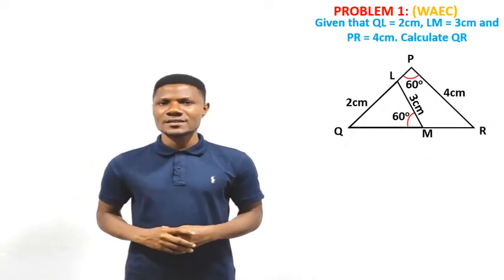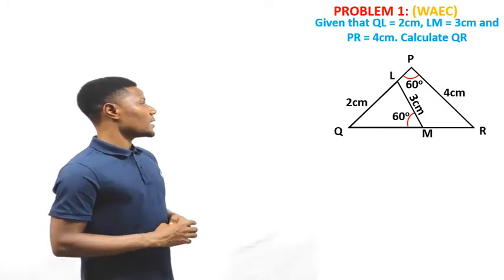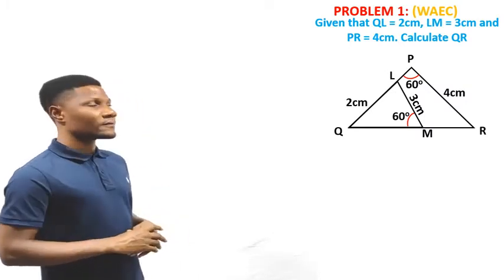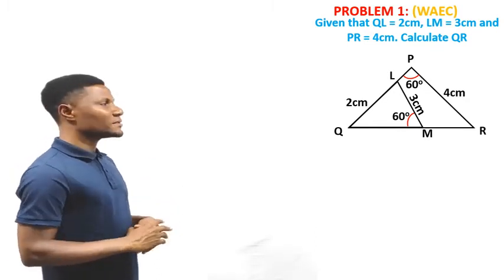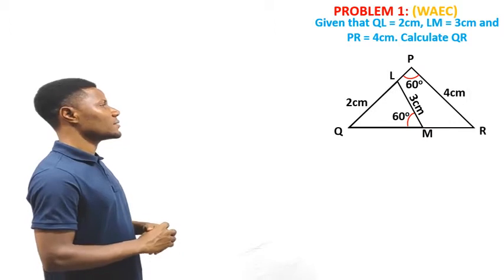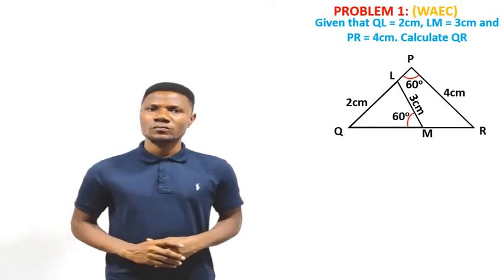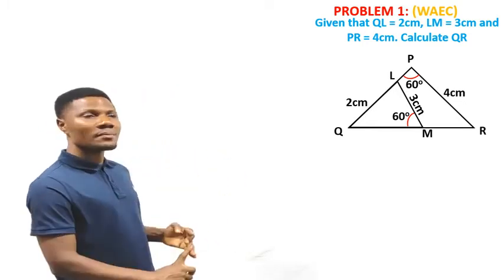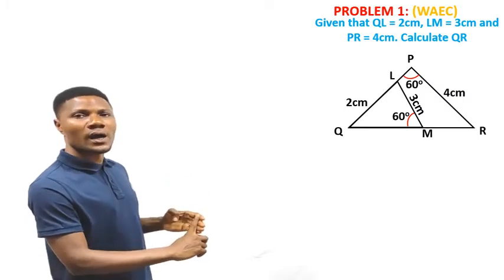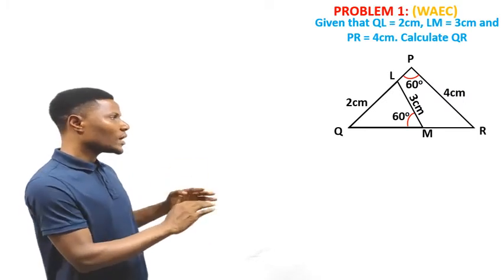Let's solve our first problem. Problem 1 is a WAEC-style question. The question says: given that QL is 2 cm, LN is 3 cm, and PR is 4 cm, calculate QR in the figure. Someone might ask — we only have one diagram, but throughout the explanation you've been giving two diagrams. Yes, it is one diagram, but in this diagram we can bring out two triangles.